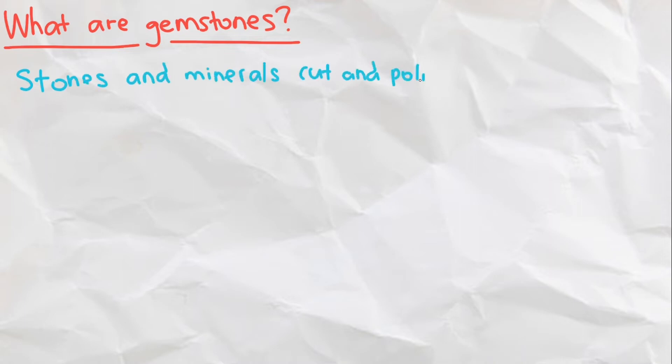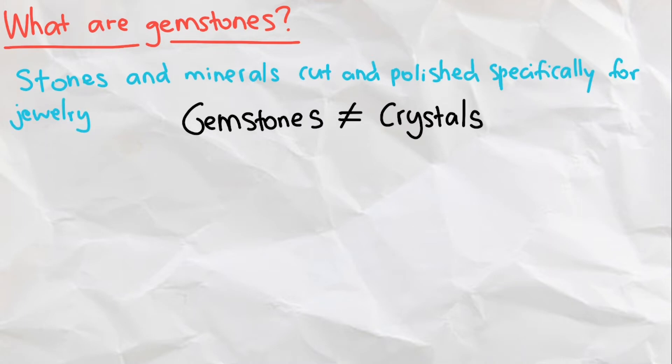Gemstones, on the other hand, are defined as stones and minerals cut and polished specifically for jewelry. This means that some gemstones aren't necessarily crystals.